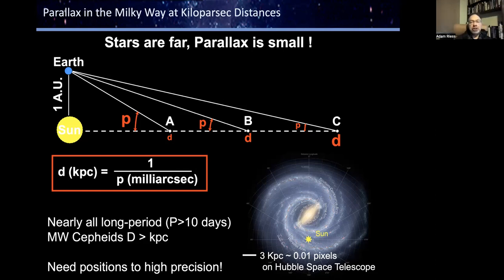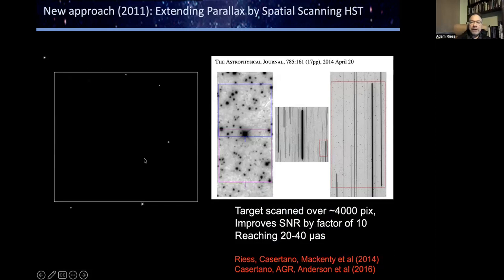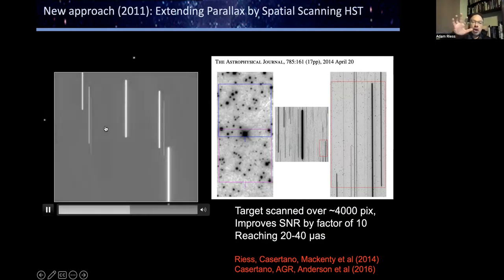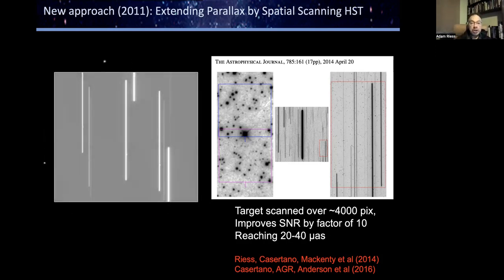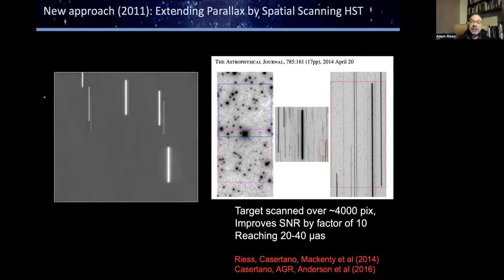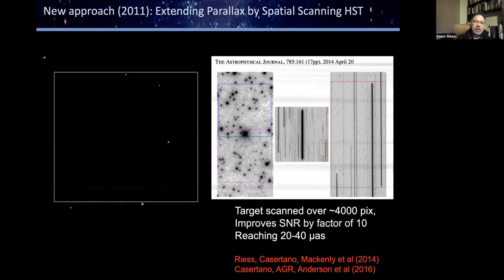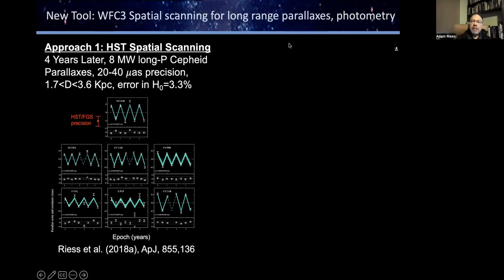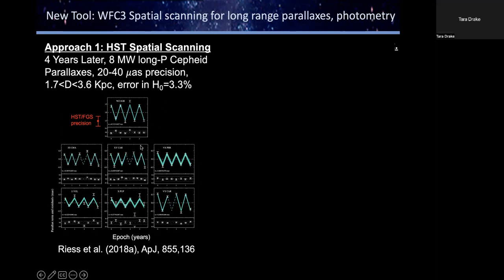We developed a new technique about 10 years ago using the Hubble Space Telescope: spatially scanning or drift scanning the telescope during the observation so that stars move by and you can measure the changing separation to much higher precision than in staring mode. With this technique we found we could get to 20 to 40 micro-arc seconds. Using this approach with about eight Milky Way long-period Cepheids, measuring a data point every six months, the back-and-forth parallax motion allowed us to calibrate distances to about 3% precision in the Hubble constant.